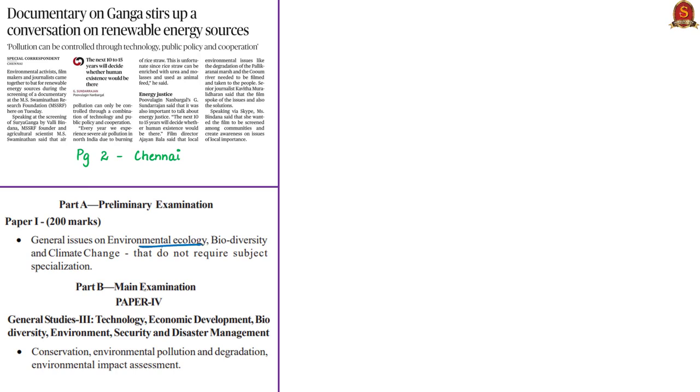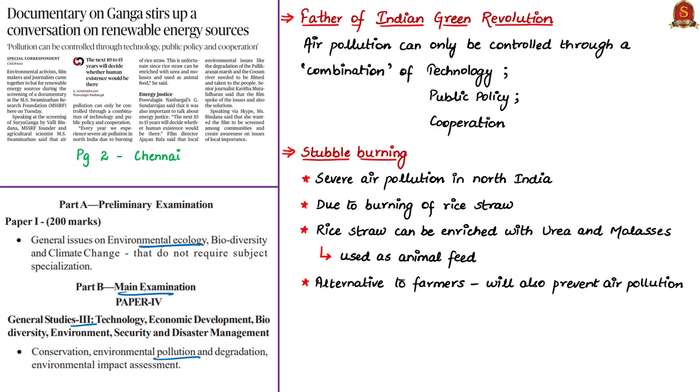The next article covers comments made by Mr. M.S. Swaminathan, the father of Indian Green Revolution, with respect to stubble burning during a screening of a documentary at M.S. Swaminathan Research Foundation in Chennai. This article will be relevant in general issues on environmental ecology in prelim syllabus and in mains under environmental pollution. Stubble means crop residues — stubble burning means burning of crop residues, which are the stock and straw of wheat and paddy after harvesting.